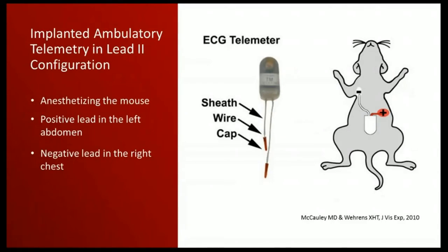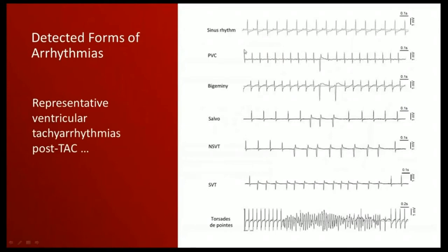To determine the consequence of the increased leak on arrhythmia, we used ECG telemetry from DSI — a two-electrode system implanted intraperitoneally in sedated and anesthetized mice, with the positive electrode in the upper left abdomen and the negative electrode in the upper right chest. Telemetry was implanted one week before TAC surgery, and arrhythmia detection was performed at two weeks and nine weeks post-TAC.